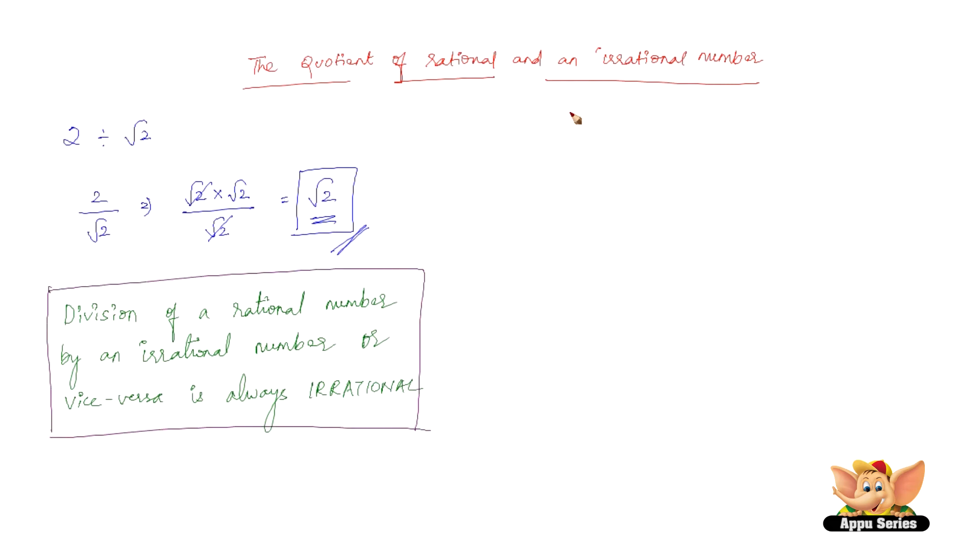Let us quickly take another example. Divide root 3 by 3. The best way of writing this would be root 3 by 3 itself. We can also write this as root 3 by 3, which can be written as root 3 into root 3, which is 1 by root 3. So we can either write this as 1 by root 3 or root 3 by 3. The result is anyways irrational.